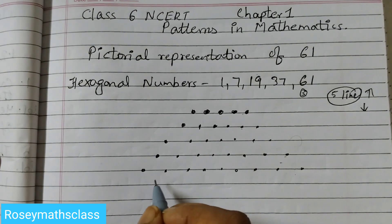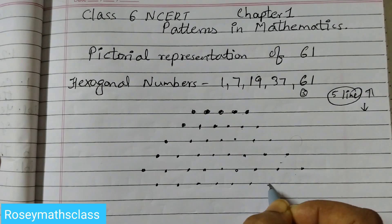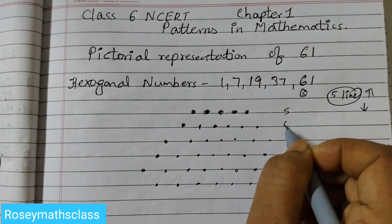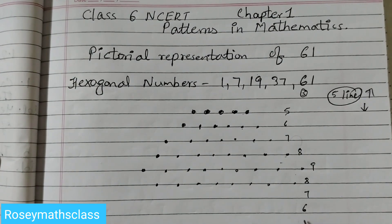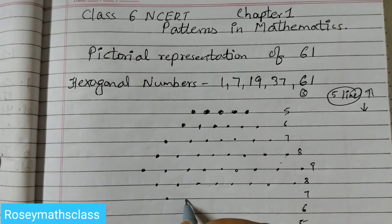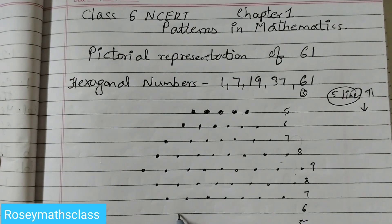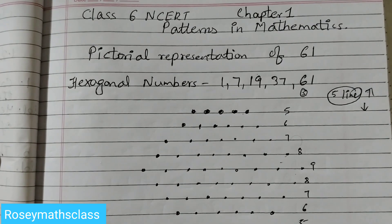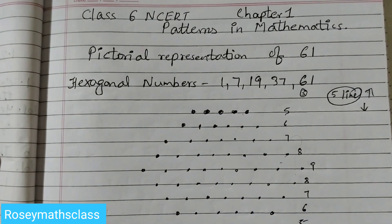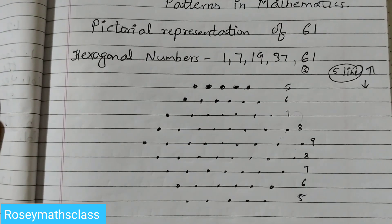Now it will be decreasing — the number of dots will decrease. We started at nine, so it goes 9, 8, 7, 6, 5. So the lines are 8 dots, then 7 dots — 1, 2, 3, 4, 5, 6, 7 — then down to 5. If you count all these dots there are 61 dots in total.